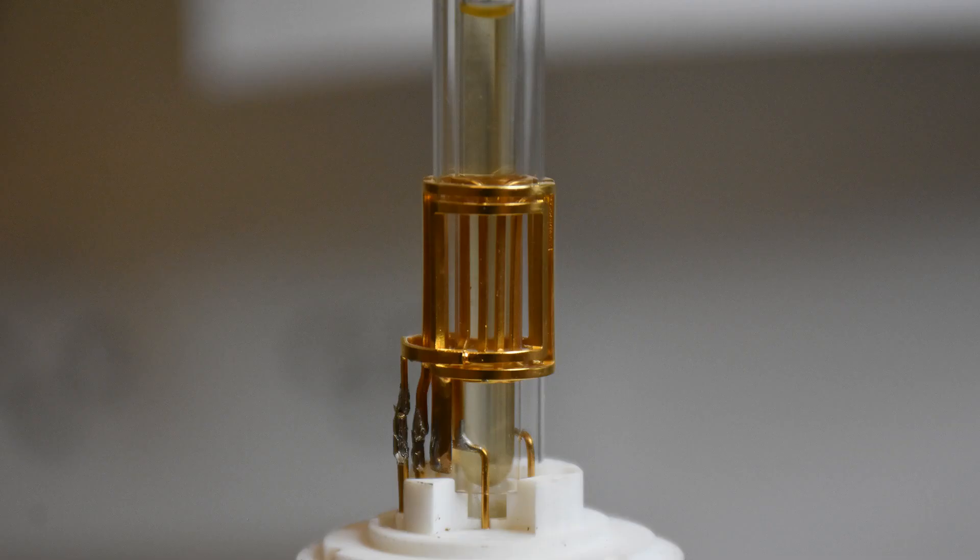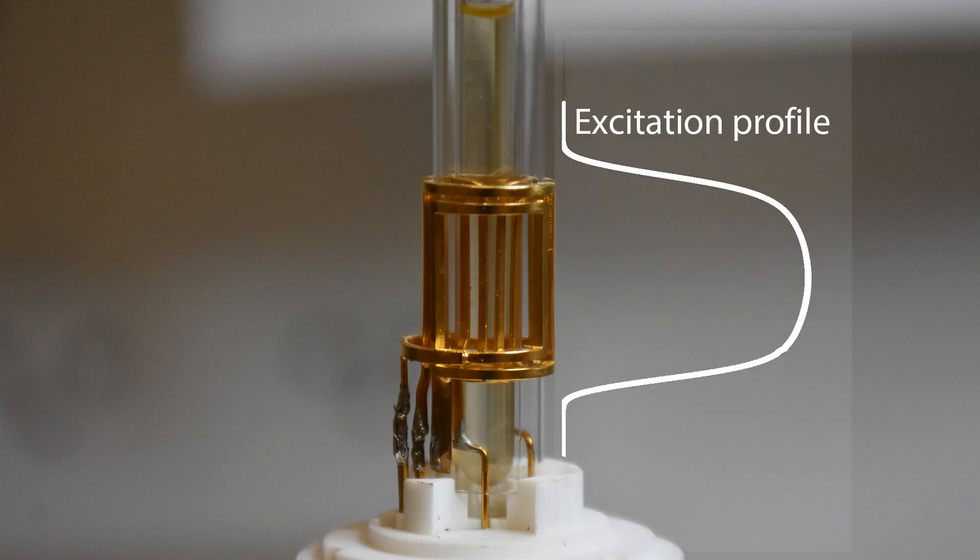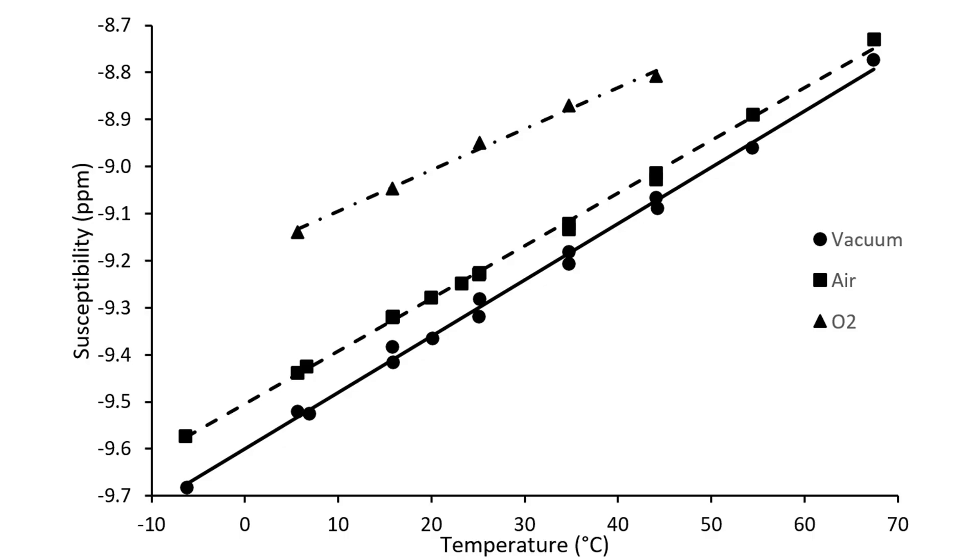The response curve for the probe is measured from the line shape arising from the gradient echo. The sample is compared with the gaseous sample with low bulk magnetization to obtain the absolute bulk magnetization.